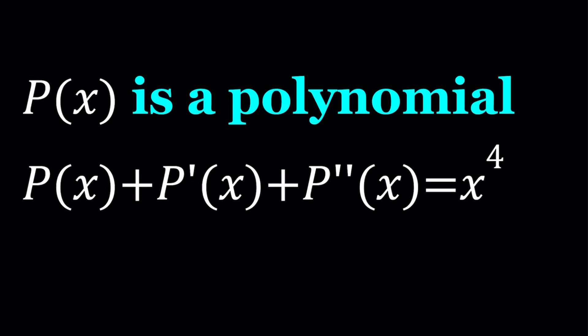Hello everyone. In this video, we're going to be solving a differential equation, but a special type because P of X is a polynomial and we're given an equation that is satisfied by P of X, which is P plus P prime plus P double prime equals X to the fourth power. So the double prime is the second derivative, which is the derivative of the derivative.